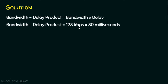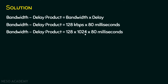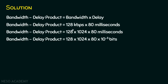First, we convert kilobits to bits by multiplying by 1024, giving 128 × 1024 bits per second. Then we convert 80 milliseconds to seconds as 80 × 10⁻³ seconds. So the entire bandwidth-delay product is 128 × 1024 × 80 × 10⁻³ bits, because the kilobits-to-bits conversion has been applied.